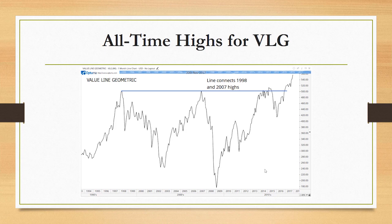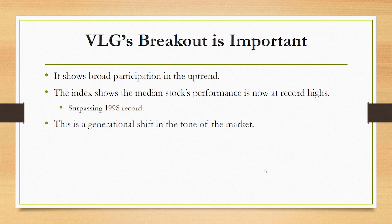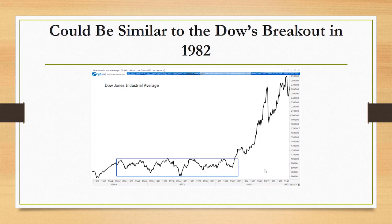Here's the chart — we're now above highs that were reached in 1998. It's been a long time to get a breakout like this, and when we see a breakout like this on a chart it tends to carry a great deal of significance. It shows we have broad participation in the uptrend, and this is a generational shift in the tone of the market.